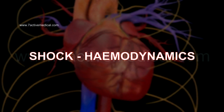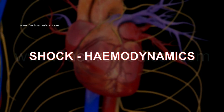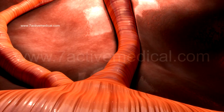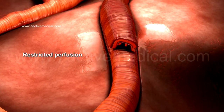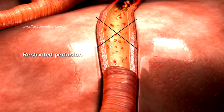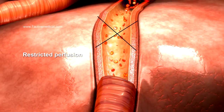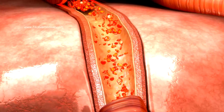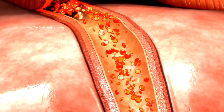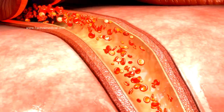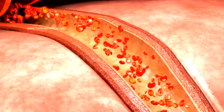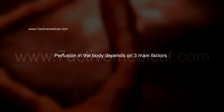Shock Hemodynamics. Shock is a state of restricted perfusion or blood flow to the various tissues of the body. Perfusion rate can be measured in terms of liters per minute of blood upon grams of tissue perfused. Perfusion in the body depends on three main factors.